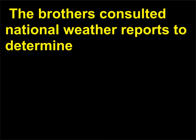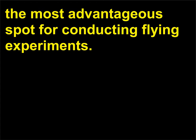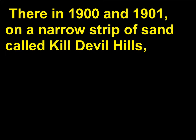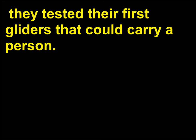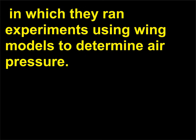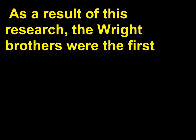The brothers consulted national weather reports to determine the most advantageous spot for conducting flying experiments. Based on this data, they concluded it was Kitty Hawk, North Carolina. There in 1900 and 1901, on a narrow strip of sand called Kill Devil Hills, they tested their first gliders that could carry a person. Back at their bicycle shop in Ohio, they constructed a small wind tunnel, about six feet in length, in which they ran experiments using wing models to determine air pressure. As a result of this research, the Wright brothers were the first to write accurate tables of air pressures on curved surfaces.